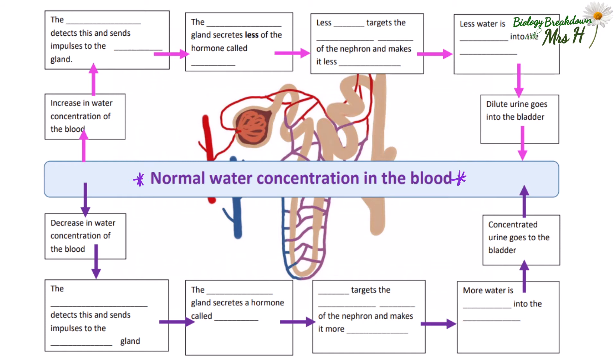Let's work through this flow chart. If there is a decrease in water concentration in your blood — perhaps because you haven't drunk enough or you've been exercising and sweating — this decrease in water concentration is detected by the hypothalamus in the brain. The hypothalamus has lots of different receptors, some of which are sensitive to detecting water concentration in the blood.